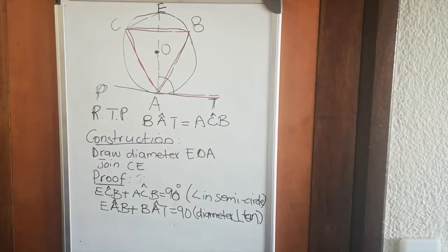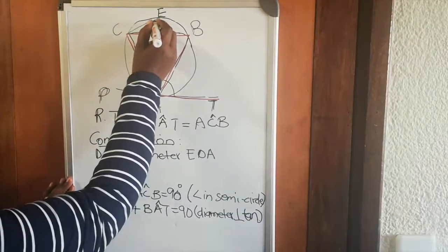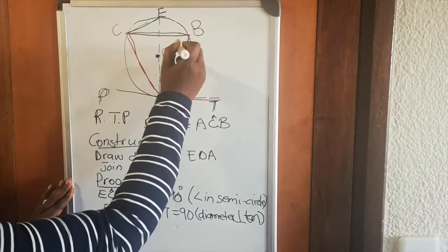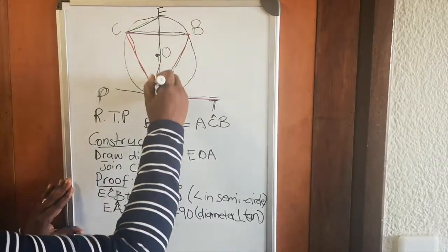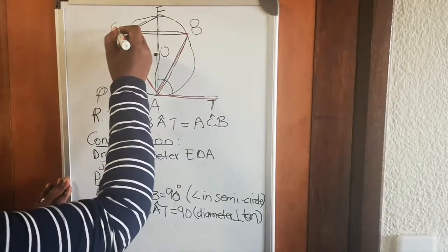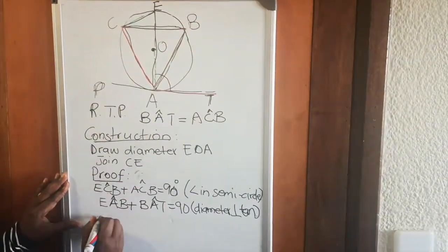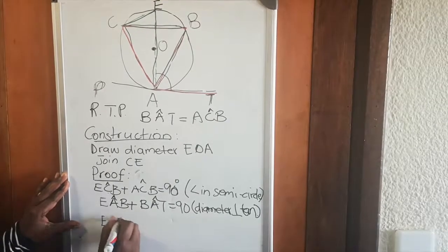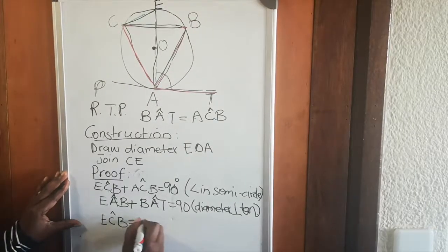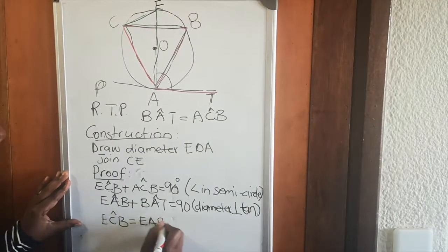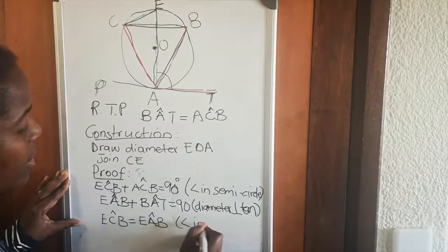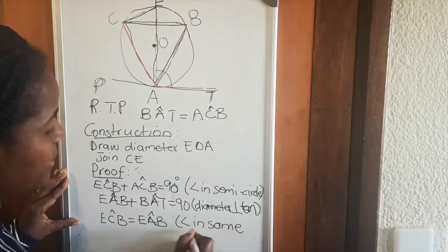The last theorem we use involves looking at these two angles. Angle E-C-B equals angle E-A-B, and the reason is: angles in the same segment are equal.